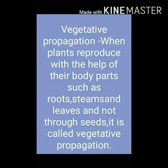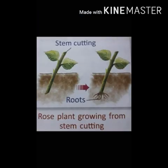The third way of reproduction in plants is vegetative propagation. What is vegetative propagation? Beside growing from seeds, new plants also grow from roots, stems, and leaves of the plant. This is called vegetative propagation.